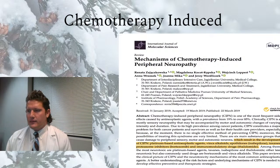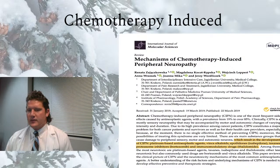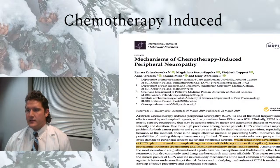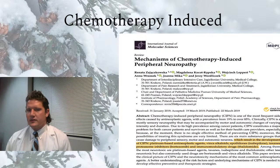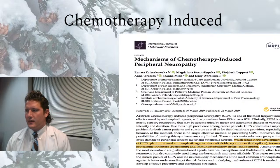What happens with chemo is that while it's killing the cancer, it also kills parts of our own body — and the peripheral nerves can be very affected in that situation.